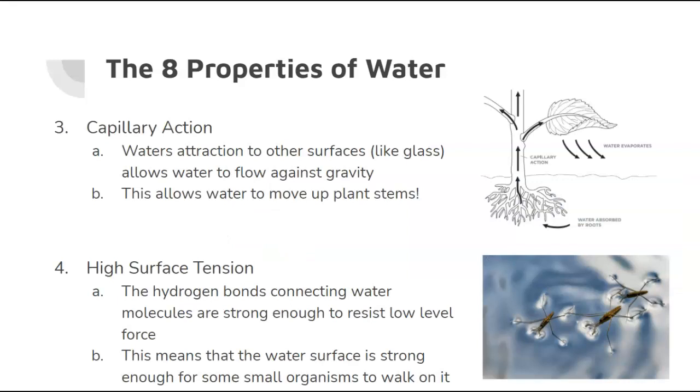The next two properties of water kind of deal with that, building off of cohesion and adhesion. So capillary action is similar to adhesion. Water's attraction to other surfaces like glass, or in this case, we're looking at a plant over here. Because water can stick to the stem of a plant, it allows water to actually flow against gravity. So that's how water is taken up by roots and pulled all the way up through a stem and then out to leaves or evaporated off the top. But because water can stick to other surfaces, it can go against gravity. So even though capillary action is similar to adhesion, the key here is that it can flow against gravity.